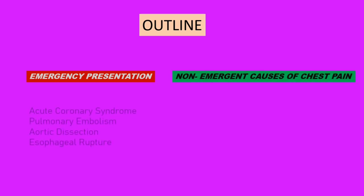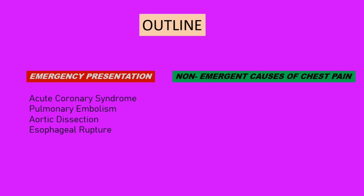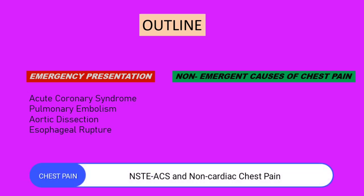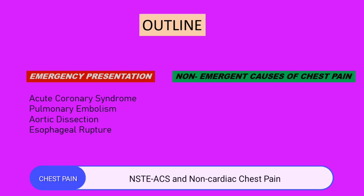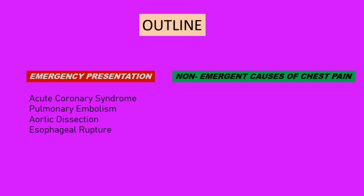Chest pain can present as an emergency, or the causes may be subtle. Life-threatening causes of chest pain include acute coronary syndrome, pulmonary embolism, aortic dissection, and esophageal rupture. Because STEMI can be recognized on the ECG, the major challenge is to distinguish between non-ST-segment elevation acute coronary syndrome and non-cardiac chest pain. With an uncomplicated acute myocardial infarction, the examination may be negative.